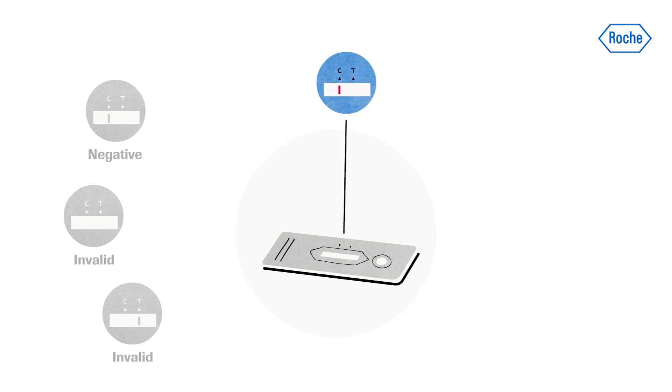In the case of a positive result, a colored line appears in the lower section of the result window. This is the test line T. Even if a test line is very faint or not uniform, the test result should be interpreted as a positive result.